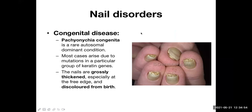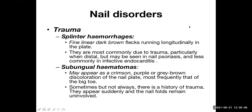Some congenital conditions affect the nail. Pachyonychia congenita is a rare autosomal dominant condition where the patient has grossly thickened and discolored nails from birth. Most cases arise due to mutation in a particular group of keratin genes. When the person is small the changes may be subtle, but they become very obvious as the person grows older.